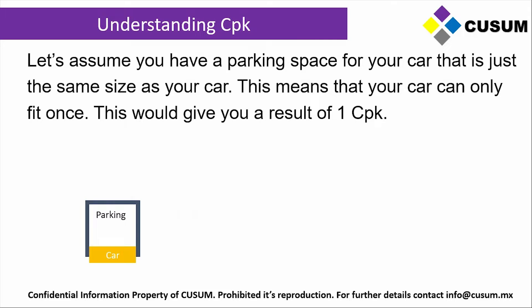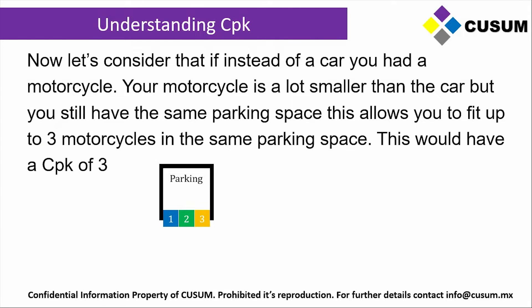On our previous example, with one car fitting only once inside a parking lot, we would call that a CPK of 1 — meaning I can fit the process once inside my spec. My spec being my parking lot, and my process being simulated by my car. If I switch over to the motorcycles and I can fit three motorcycles inside that same parking lot, my parking lot is still my specifications while my motorcycle becomes my process variation.